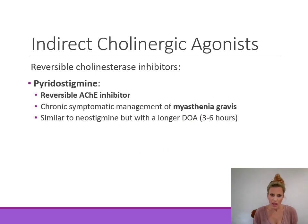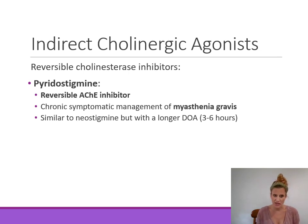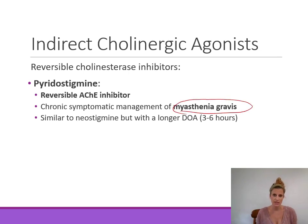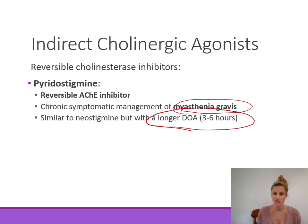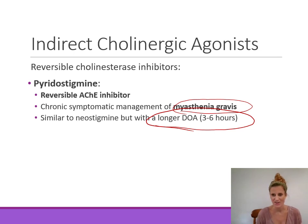Pyridostigmine is similar to neostigmine — a reversible acetylcholinesterase inhibitor used for chronic symptomatic management of myasthenia gravis with the same cholinergic side effects. Like neostigmine, it does not enter the central nervous system. The key difference is that pyridostigmine has a longer duration of action than neostigmine, making it easier to establish a dosing regimen for chronic treatment of myasthenia gravis.